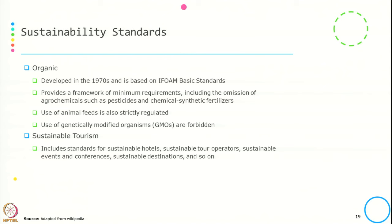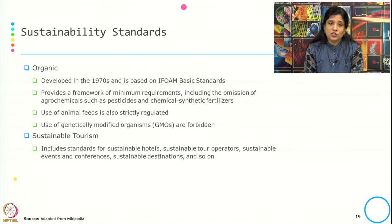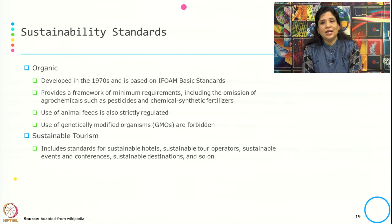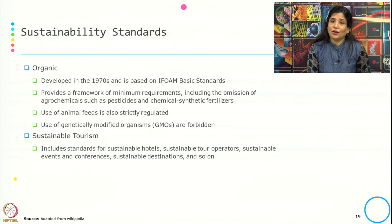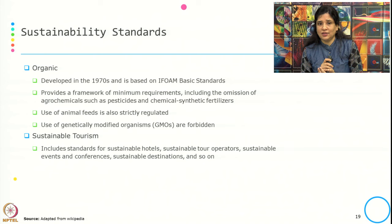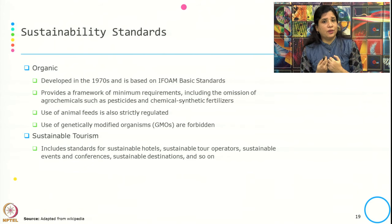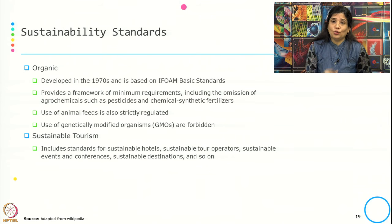The next sustainability standard is Organic. It developed in the 1970s and is based on IFOAM's basic standards. It provides a framework of minimum requirements including the omission of agrochemicals such as pesticides and chemical synthetic fertilizers. Use of animal feed is also strictly regulated, and use of GMOs — genetically modified organisms — are also forbidden.